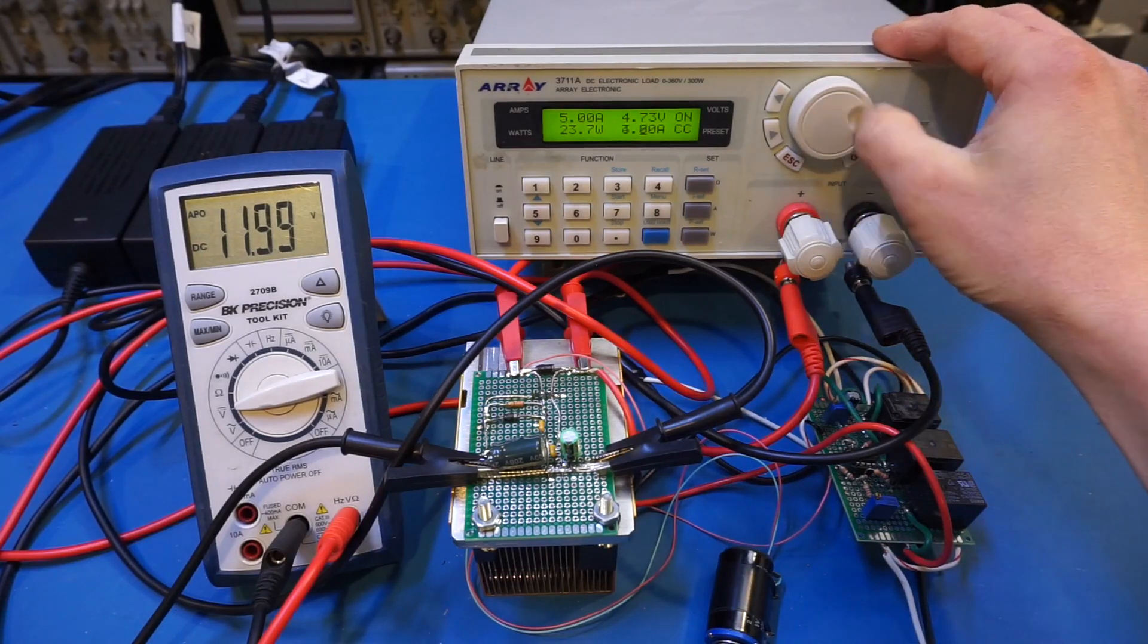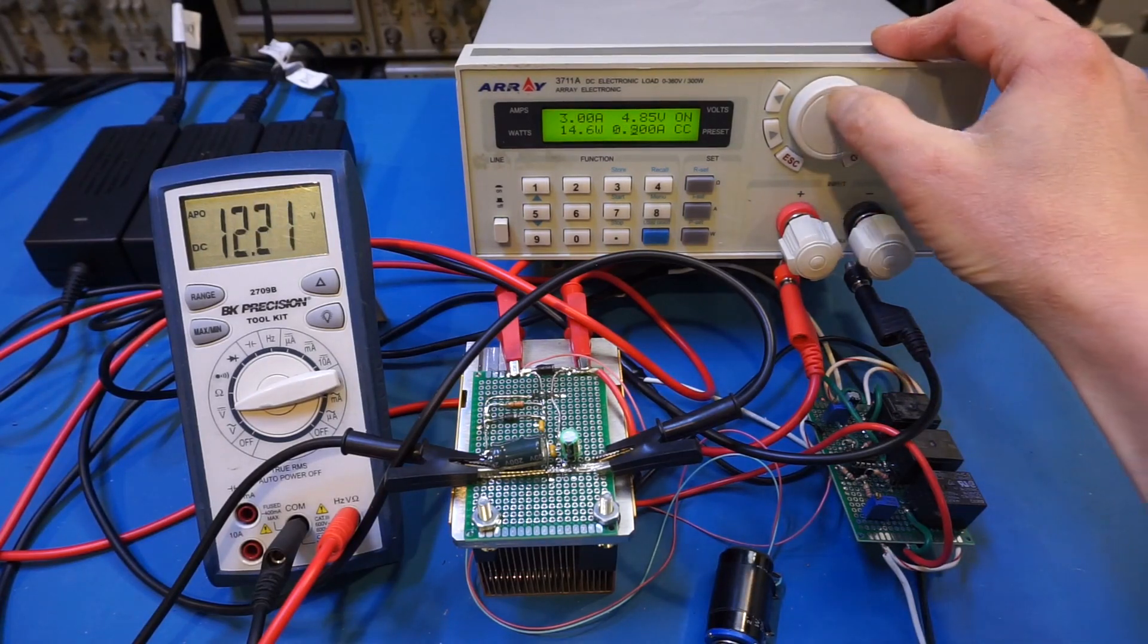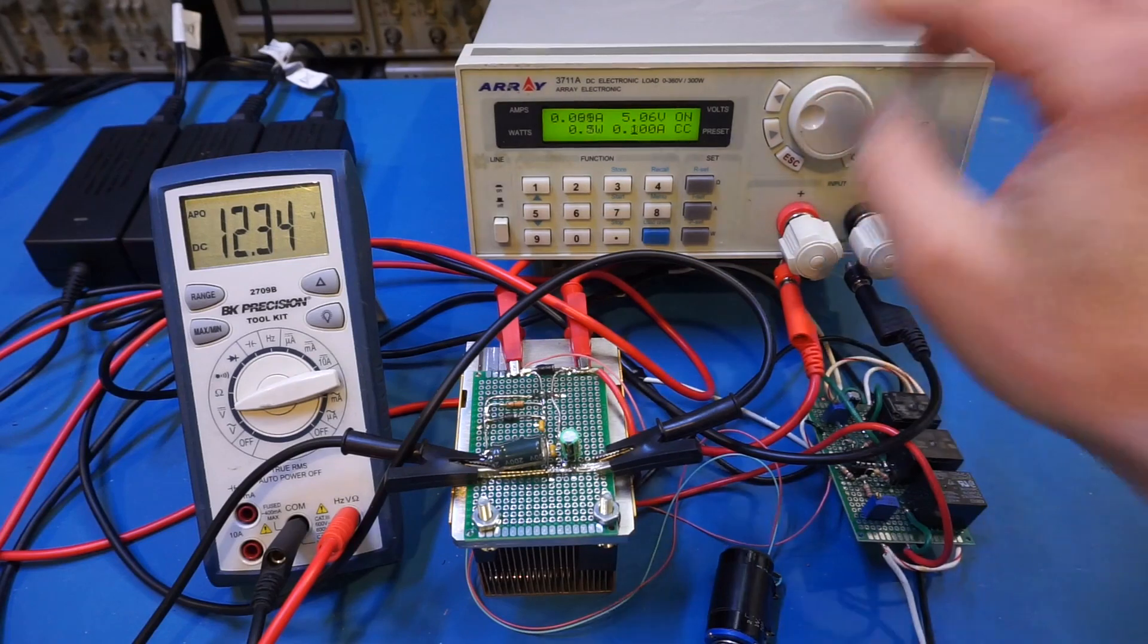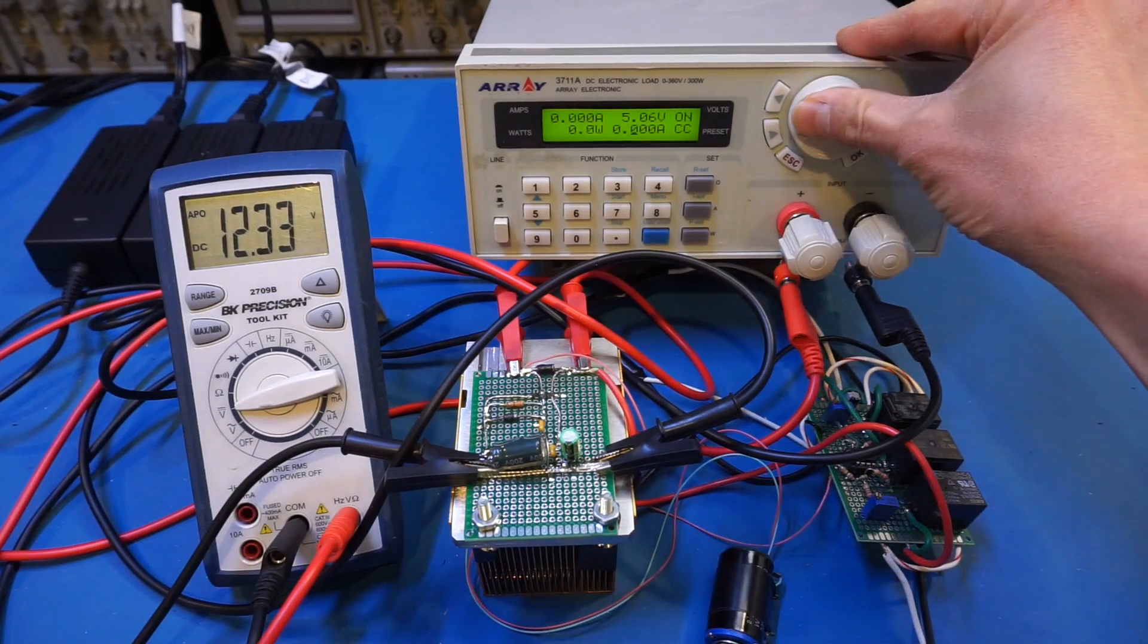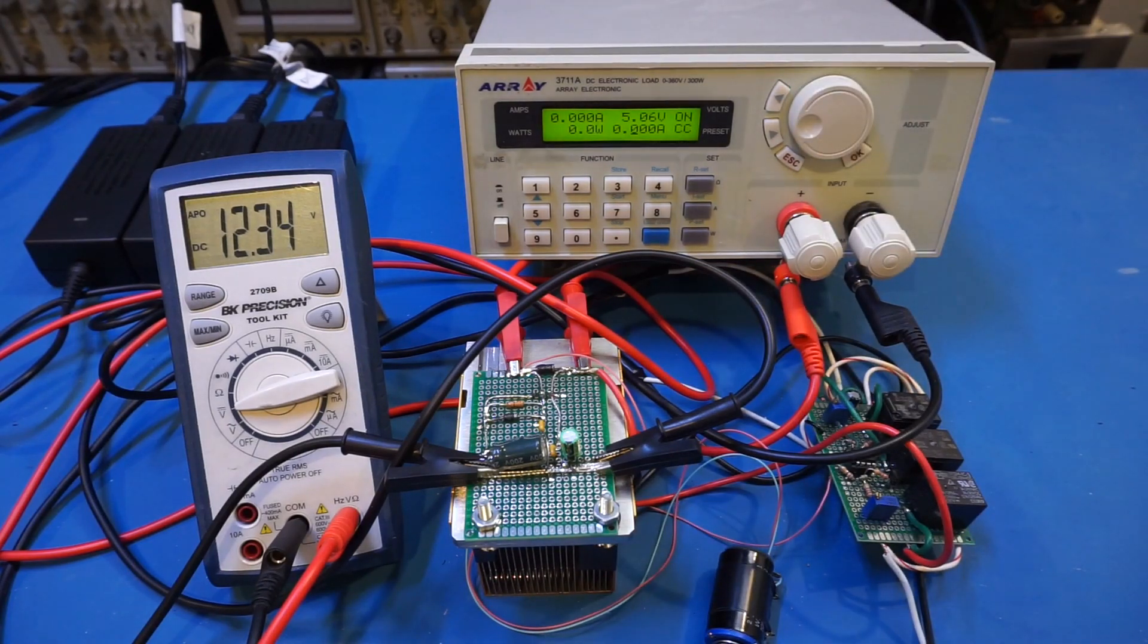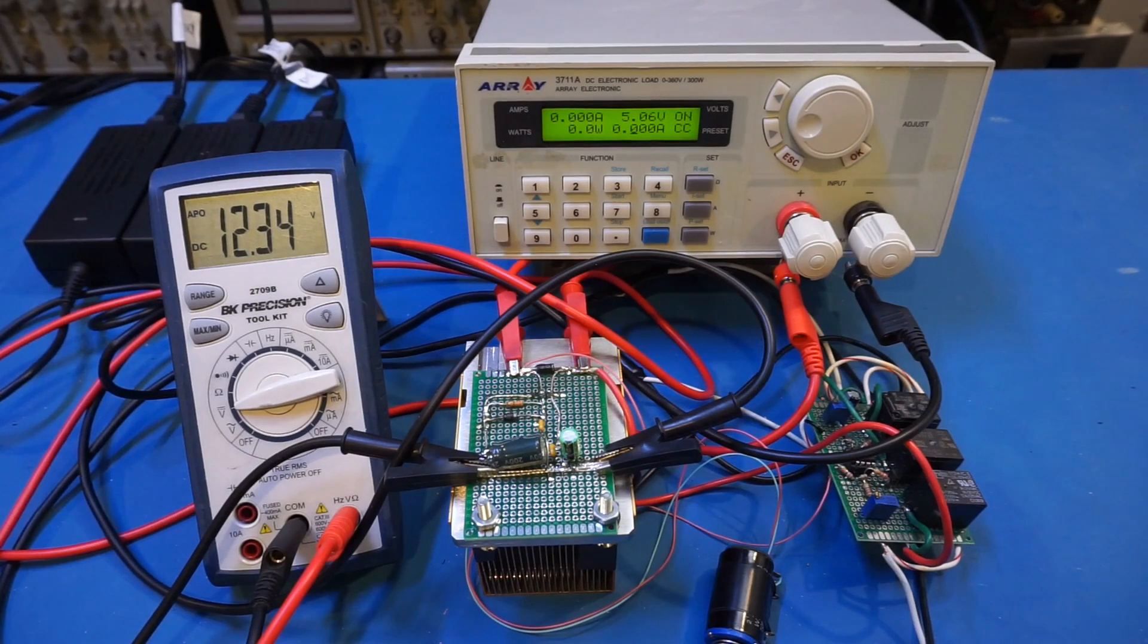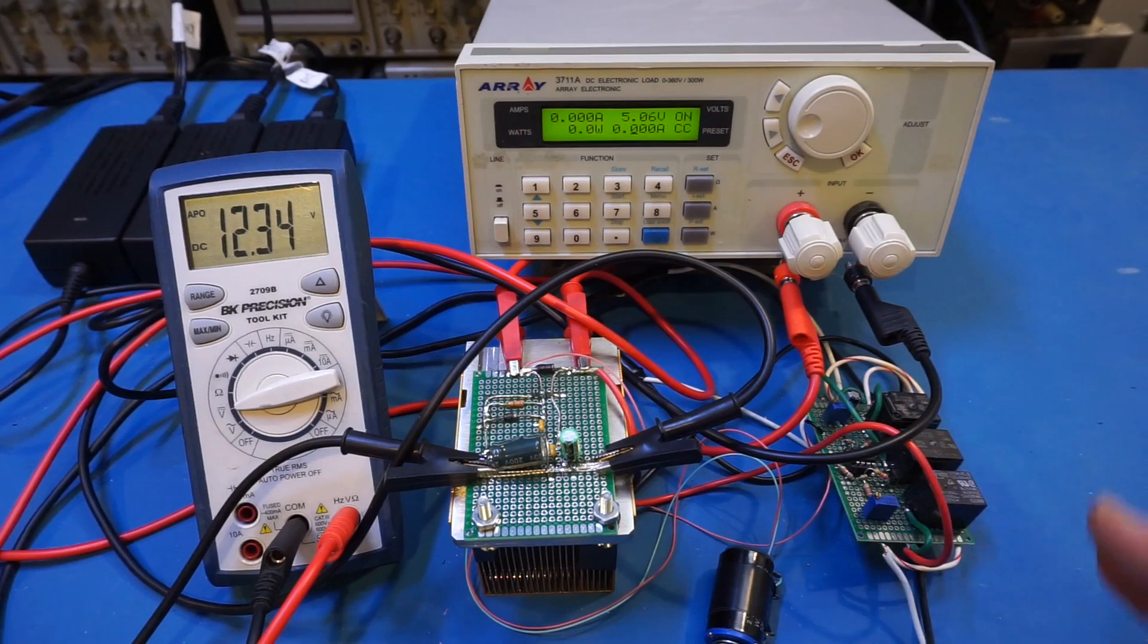So let's ramp the load down and we'll see that, and you can see we almost did not have any voltage drop at all. So very good. So now we know we can output 5 amps in the lower voltage range.